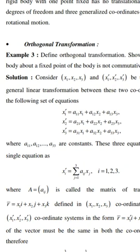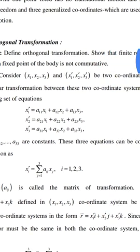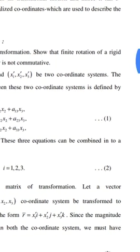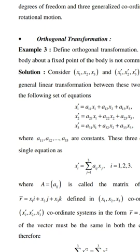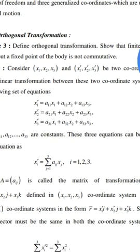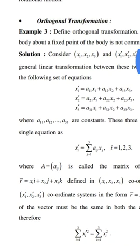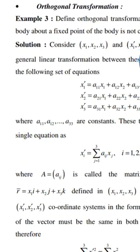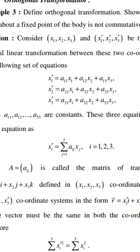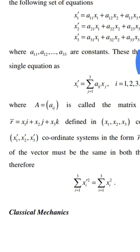Consider x1, x2, x3 and x1', x2', x3' as two coordinate systems. The general linear transformation between these two coordinate systems is defined by the following set of equations: x1' = a11*x1 + a12*x2 + a13*x3; x2' = a21*x1 + a22*x2 + a23*x3; x3' = a31*x1 + a32*x2 + a33*x3, where a11, a12, ... a33 are constants.